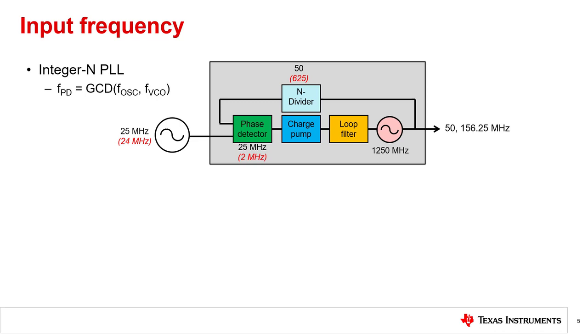To determine the maximum possible phase detector frequency, we can calculate the greatest common denominator between the reference clock and the VCO. In the example shown with a 25 megahertz input clock, the phase detector frequency could be as high as 25 megahertz. However, if the input clock is 24 megahertz, the highest possible phase detector frequency is 2 megahertz only.